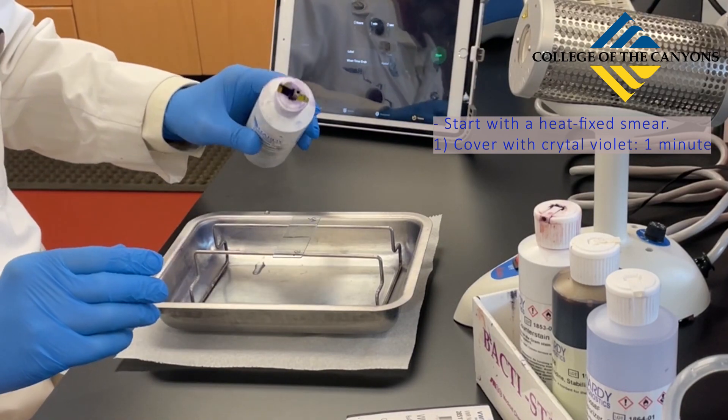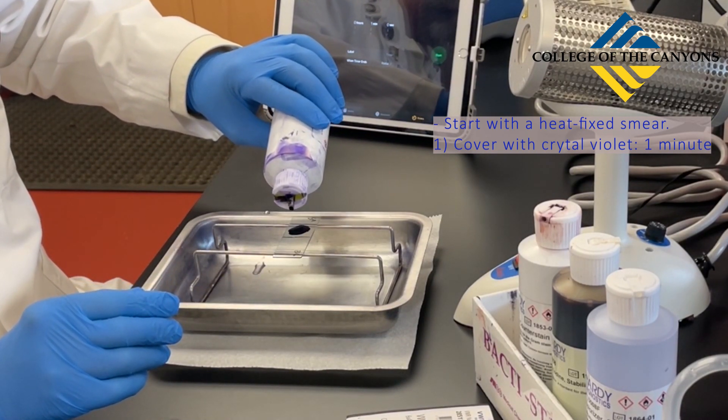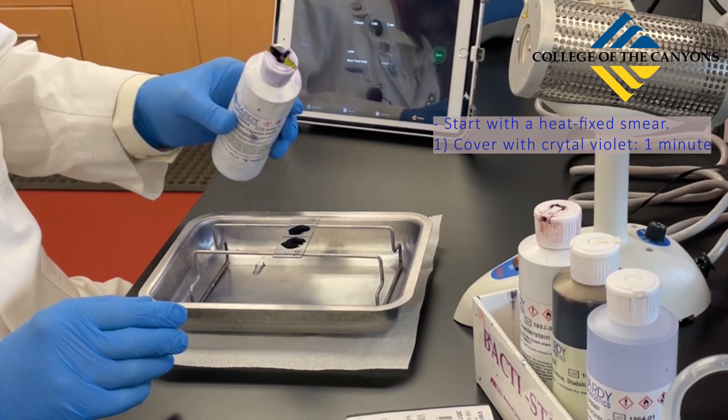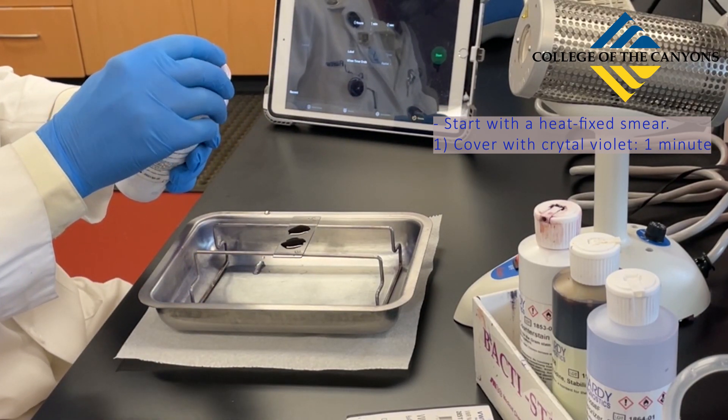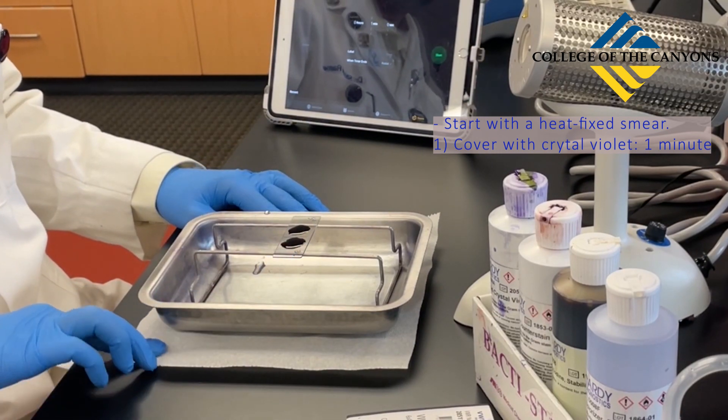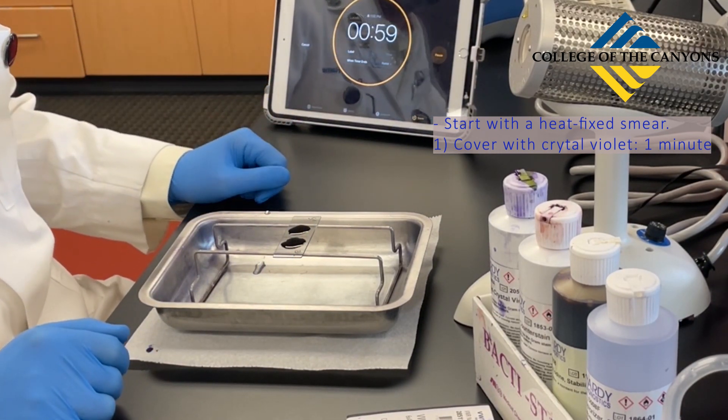Completely cover your smear or smears with crystal violet, which is the primary stain for the gram stain procedure. Leave the crystal violet stain on your smear for at least one minute.